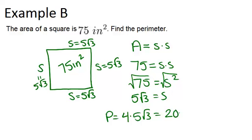which is 20 root 3. So the perimeter of this square is 20 root 3 inches, because our units in this problem is inches.